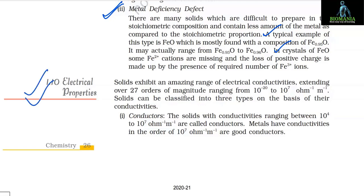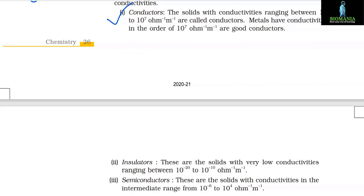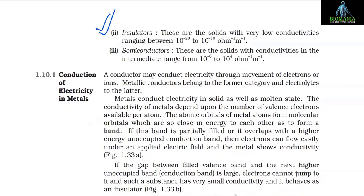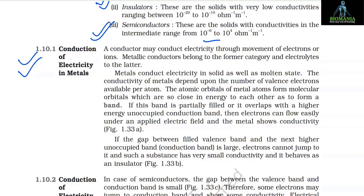1.10 Electrical Properties. Solids exhibit an amazing range of electrical conductivities extending over 27 orders of magnitude — from 10⁻²⁰ to 10⁷ per ohm per meter. Solids are classified into three types: (1) Conductors — conductivities ranging from 10⁴ to 10⁷ per ohm meter; metals have conductivities in the order of 10⁷ per ohm meter. (2) Insulators — very low conductivities ranging from 10⁻²⁰ to 10⁻¹⁰ per ohm meter. (3) Semiconductors — intermediate conductivities from 10⁻⁶ to 10⁴ per ohm meter.